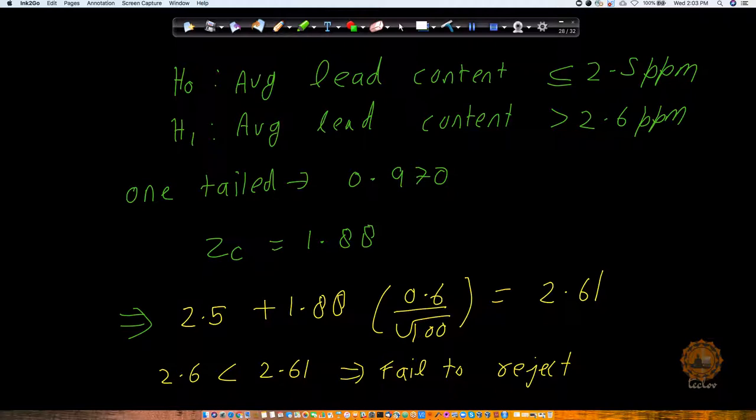It's a one-tailed test we have already seen. So what is going to be the value? Now it's not going to be 0.950 because 0.950 for one-tailed test was there if the alpha was 5 percent. But here we have taken alpha as 3 percent, that means we have to take 0.970.